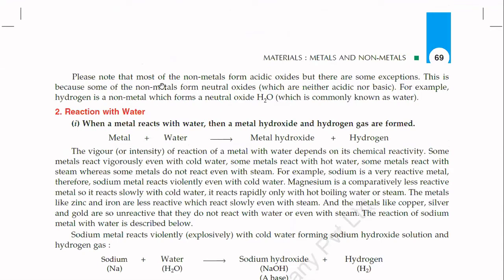Please note that most non-metals form acidic oxides, but there are some exceptions — and exceptions are always very important. Some non-metals form neutral oxides, which are neither acidic nor basic. For example, hydrogen is a non-metal which forms the neutral oxide H₂O, commonly known as water. Water is not acidic nor basic — it is neutral. So this is an exception.